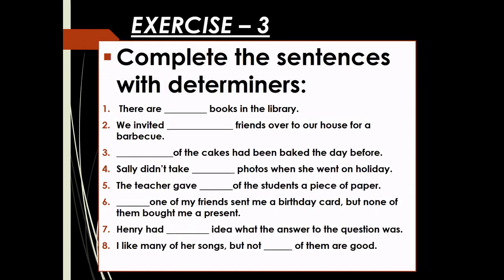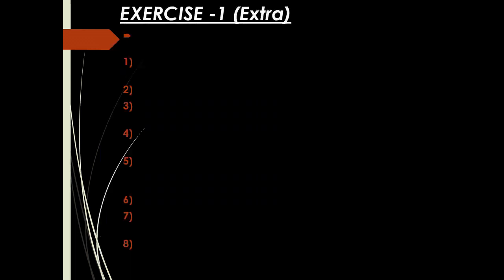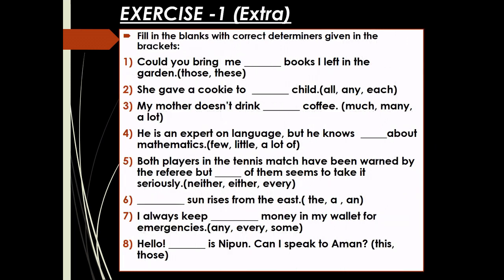Exercise Number 3: Complete the sentences with determiners — Page 15. Extra Exercise Number 1 is not in your book; it is given by me. Fill in the blanks with correct determiners given in the brackets. Do your homework in neat and clean handwriting. This is the end of the lecture. Thank you and have a nice day.